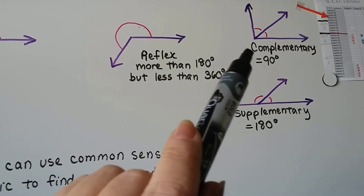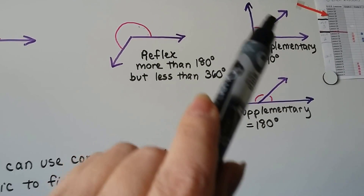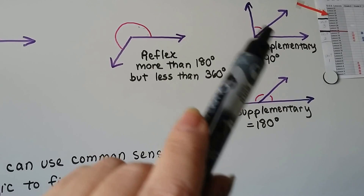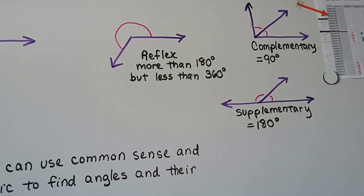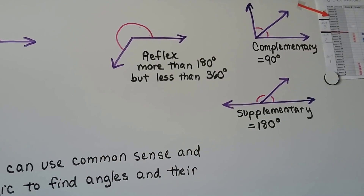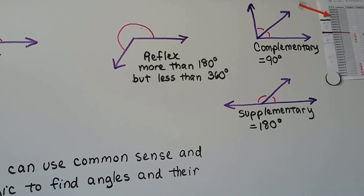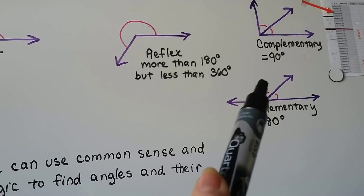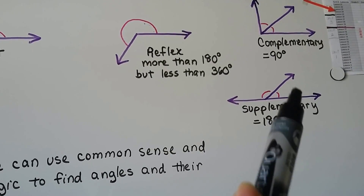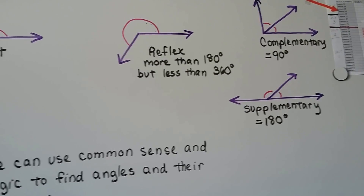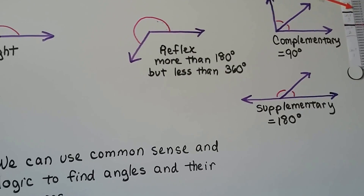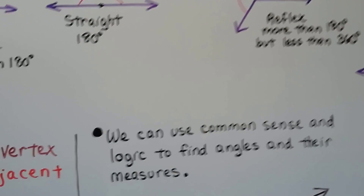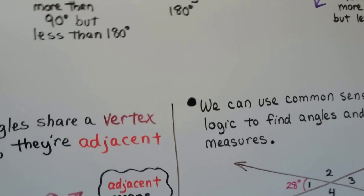Complementary angles are angles that total 90 degrees when you add them together. Supplementary angles, when you add them together, equal 180 degrees. We learned that in the last lesson.